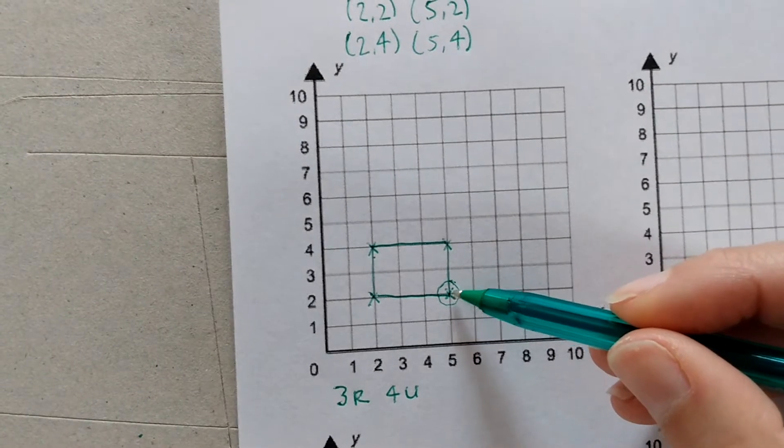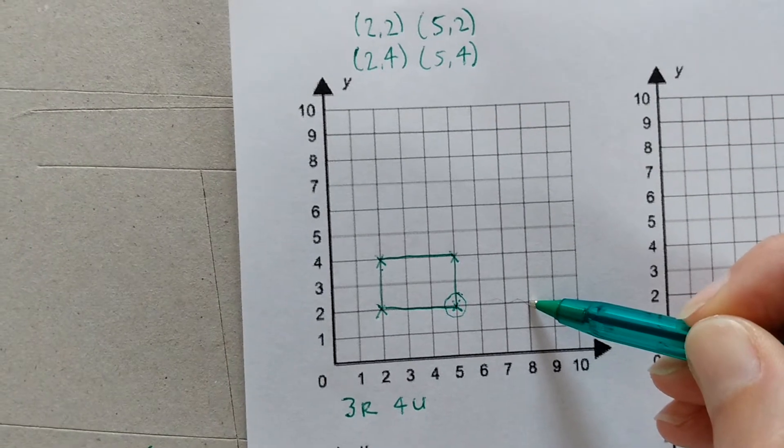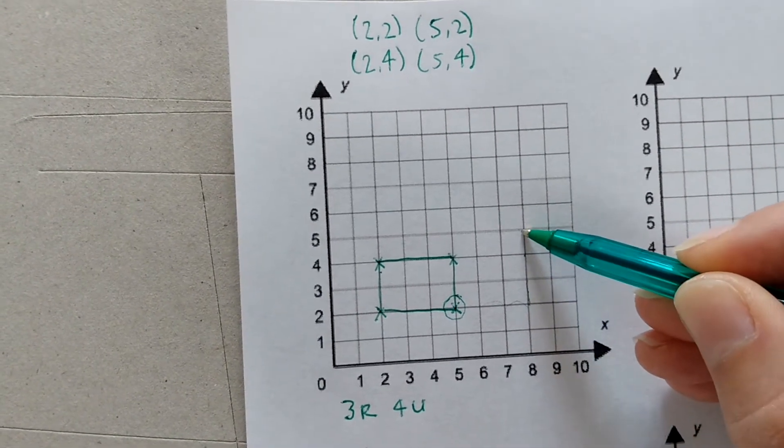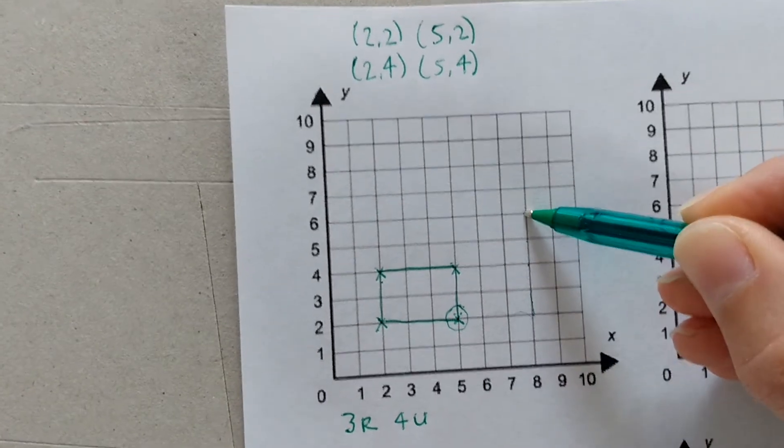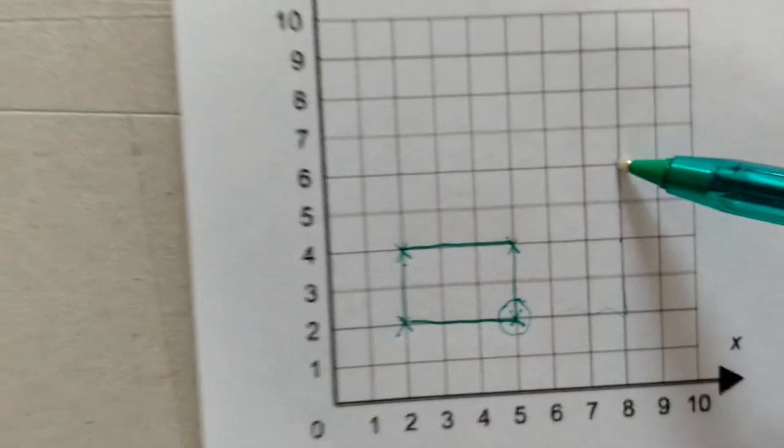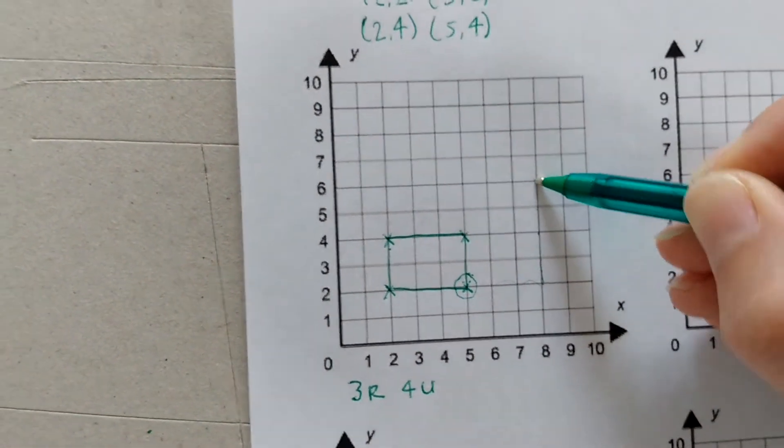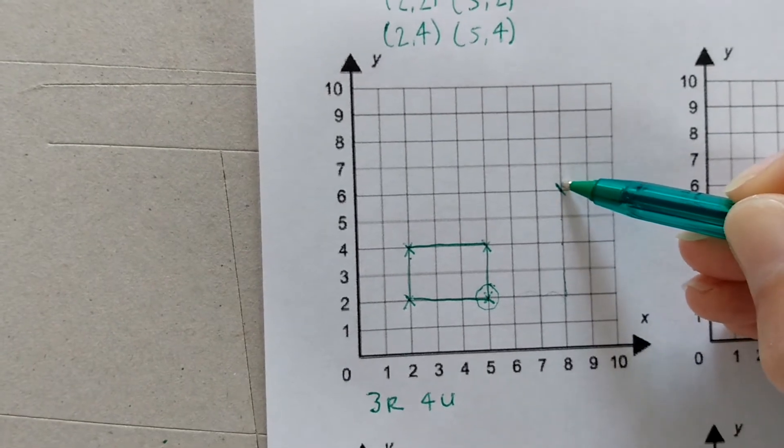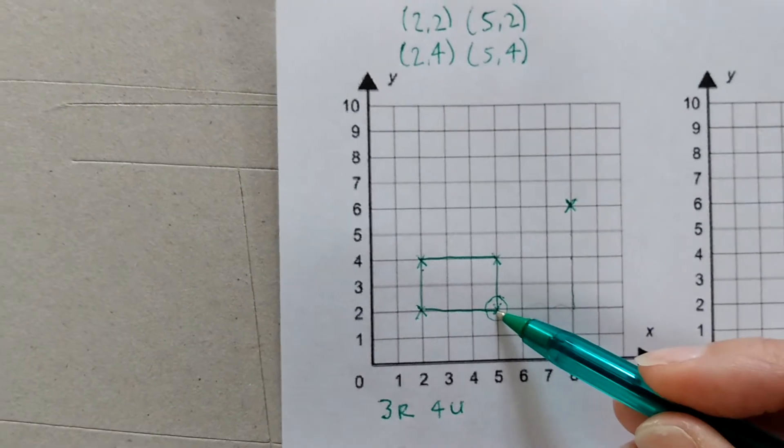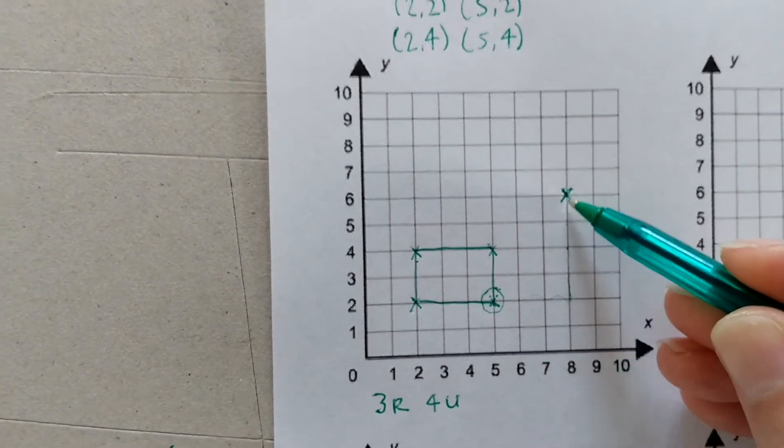I'm going to move this guy 3 right, 1, 2, 3. But he doesn't stop there because he's now got to go 4 up. 1, 2, 3, 4. Now I'm not actually really drawing anything on my page, I'm trying not to. Because it's not the line that he took to get there, it's the destination that he arrived at. So the corner of my rectangle needs to end up here, 3 right and 4 up.